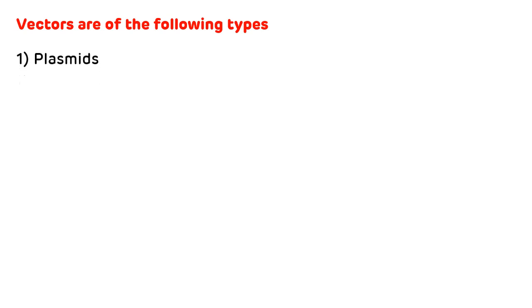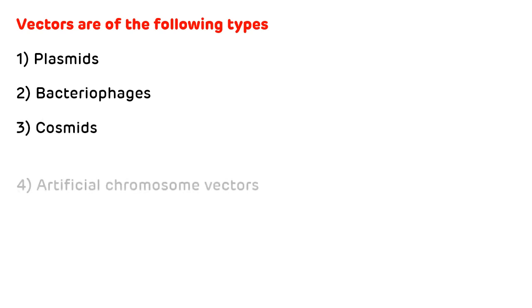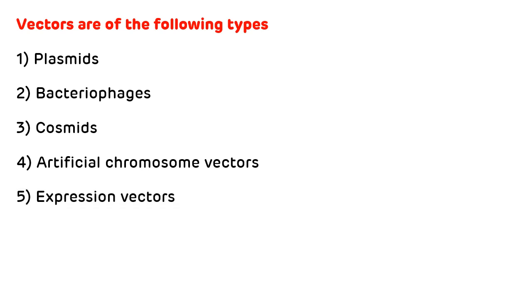There are five main types of vectors. First is plasmids. Second is bacteriophages. Third is cosmids. Fourth is artificial chromosome vectors. The last one is expression vectors. We will discuss them one by one.